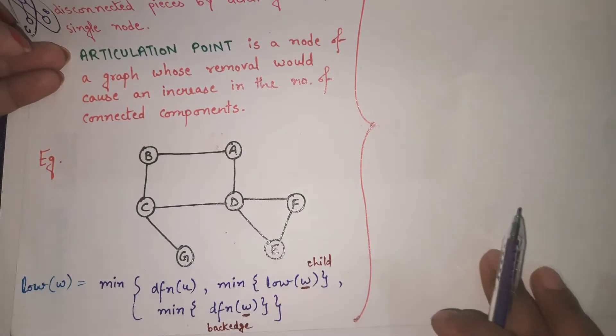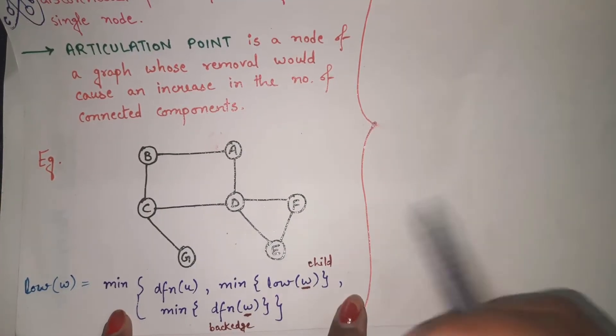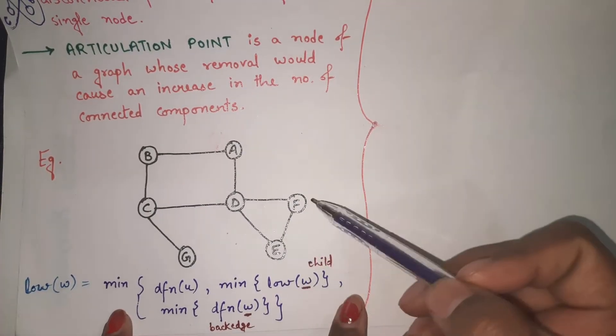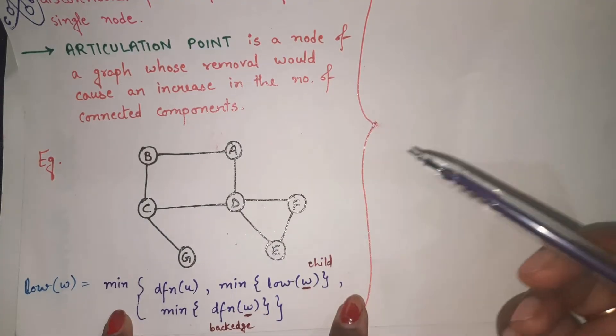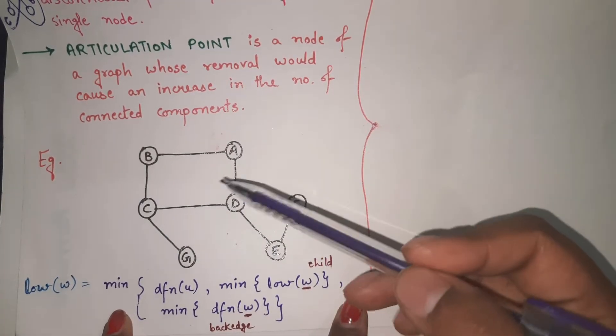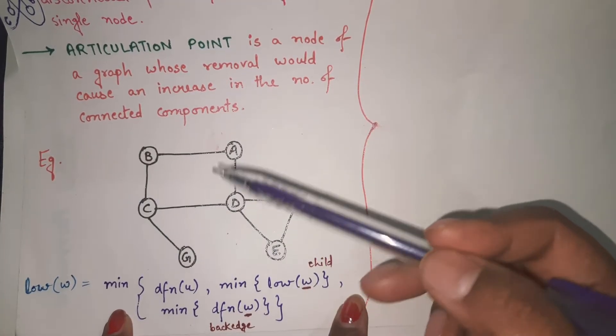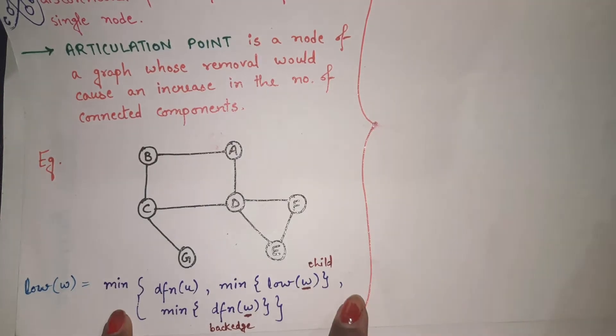Let's say this is the graph given to us with seven nodes: A, B, C, D, E, F, G. For this graph you have to find out the biconnected components and articulation points.